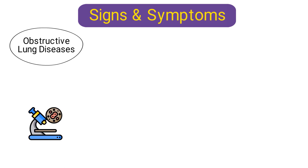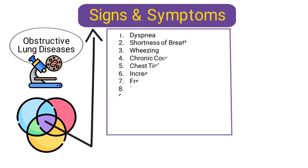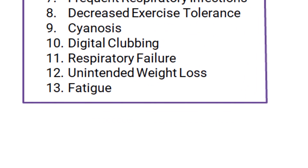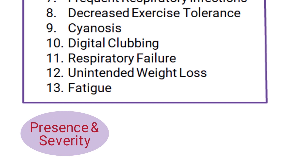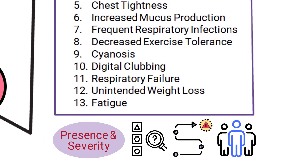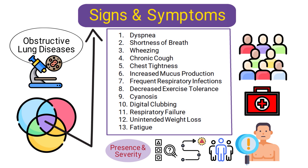Next, I should mention the signs and symptoms. Obstructive lung diseases, despite their distinct pathologies, often present overlapping clinical signs and symptoms. These include dyspnea, shortness of breath, wheezing, chronic cough, chest tightness, increased mucus production, frequent respiratory infections, decreased exercise tolerance, cyanosis, digital clubbing, respiratory failure, unintended weight loss, and fatigue. The presence and severity of these symptoms can vary based on the specific type of obstructive lung disease, its stage, and individual factors. Early diagnosis and management can help alleviate these symptoms and improve the quality of life for affected individuals.